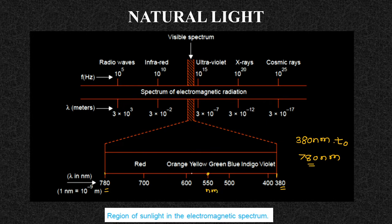At 380 nanometers you observe violet; at 400 nanometers you observe blue, with some shades of indigo. Near 500 nanometers you observe green. Green appears at 550 nanometers, yellow between 550 and 600 nanometers, orange near 660 nanometers, and red towards 700 nanometers.